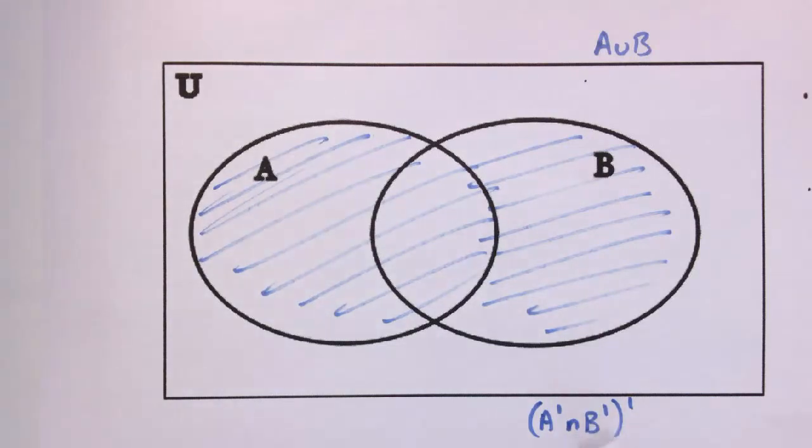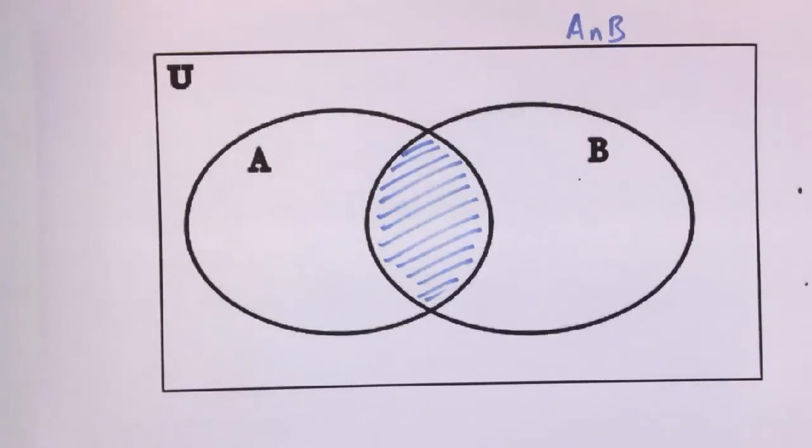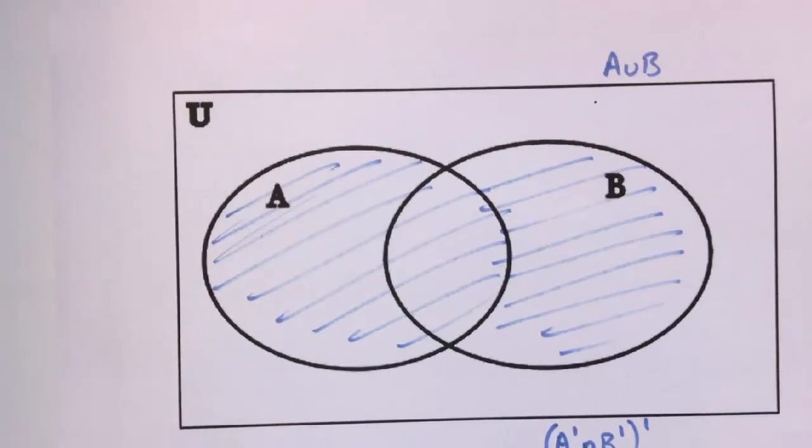You've actually got two different ways of writing the same set here, which is often true in set notation. These are the two most important ones, which is A intersect B, it looks like that, and A union B.